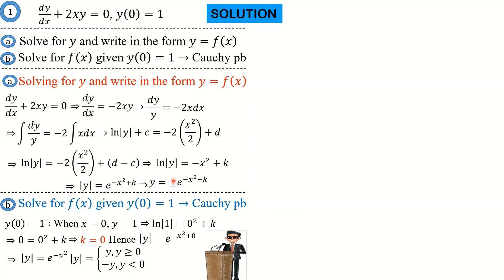Dividing both sides by plus or minus, we get y equals plus or minus e raised to the power negative x squared. Since our k is zero, we have y equals plus or minus e raised to the power negative x squared. To determine which sign to take, we fit in our initial condition: when x is 0, y is 1.